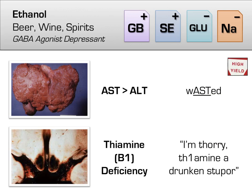Two quick clinical pearls related to alcohol. First, alcohol causes liver damage, and this can be recognized by a greater increase in AST than ALT. You can remember this by thinking of AST in the letters in the word 'wasted.' Second, long-term alcohol use can cause a deficiency of thiamine, or vitamin B1. You can remember this association by thinking of a drunk man slurring the phrase 'I'm sorry, thiamine a drunken stupor.' If you make the I into a 1, you can remember that thiamine is vitamin B1 as well.